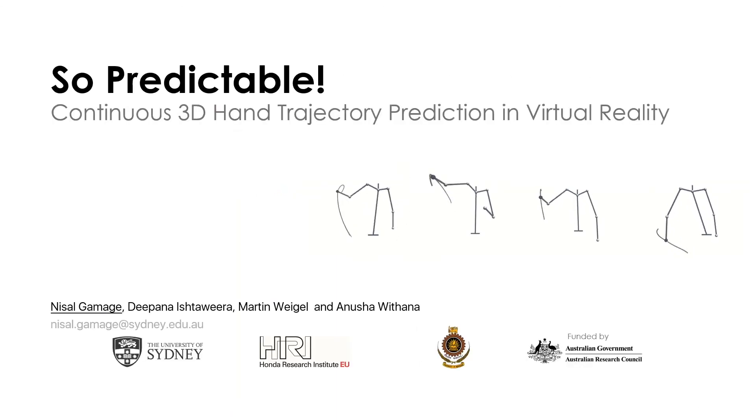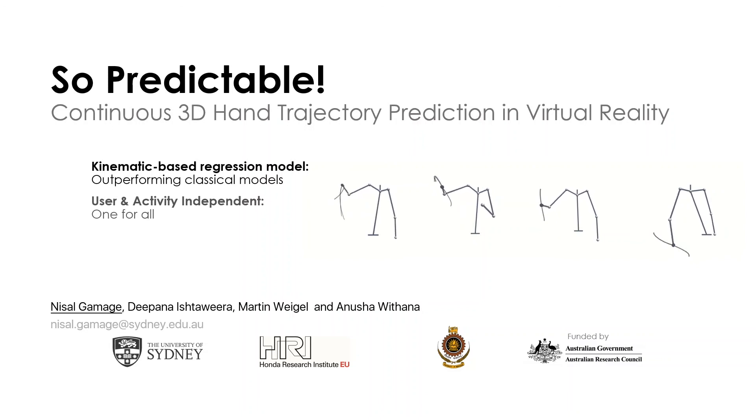To sum up, we present a kinematics-based regression model for ballistic hand movements in VR which outperform classical kinematics models. We showed our model is both user and activity independent, which makes it usable without additional training. Finally, we evaluated our model by conducting a follow-up study with new users and activities. Thank you.